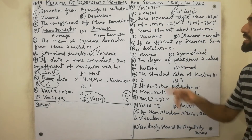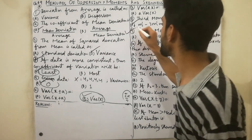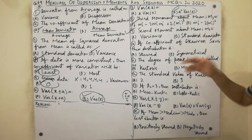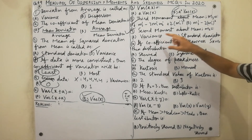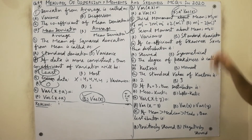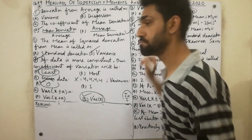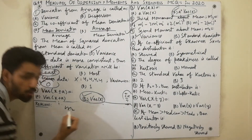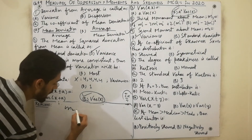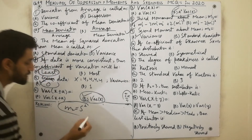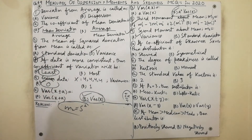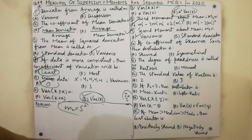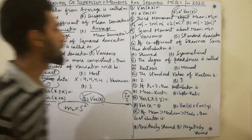MCQ nine is very important: the second moment about the mean, m2, is always equal to variance. Must remember — second moment about the mean always equals variance.